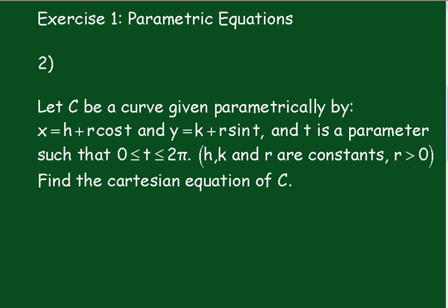Number 2. Let C be a curve given parametrically by x equals h plus r cos t and y equals k plus r sin t, and t is a parameter such that t lies between 0 and 2 pi radians. h, k, and r are constants and r being greater than zero. Find the Cartesian equation of C. I'll just pause the video.